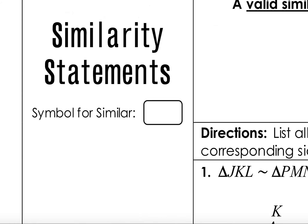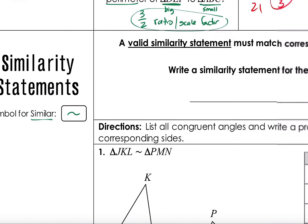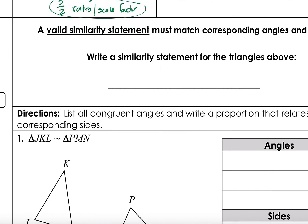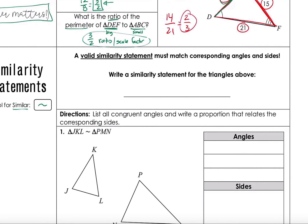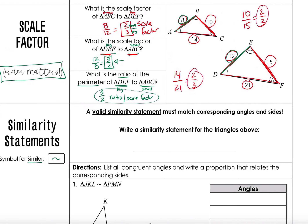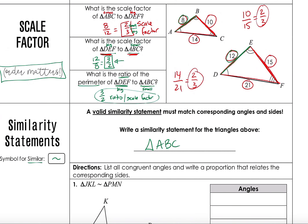Now let's look at similarity statements. The squiggly line symbol means 'similar.' A valid similarity statement must match corresponding angles and sides — just like with congruent triangles. So for triangle ABC similar to triangle DEF: A matches with D, B matches with E, and C matches with F. The vertices must be written in the correct corresponding order.